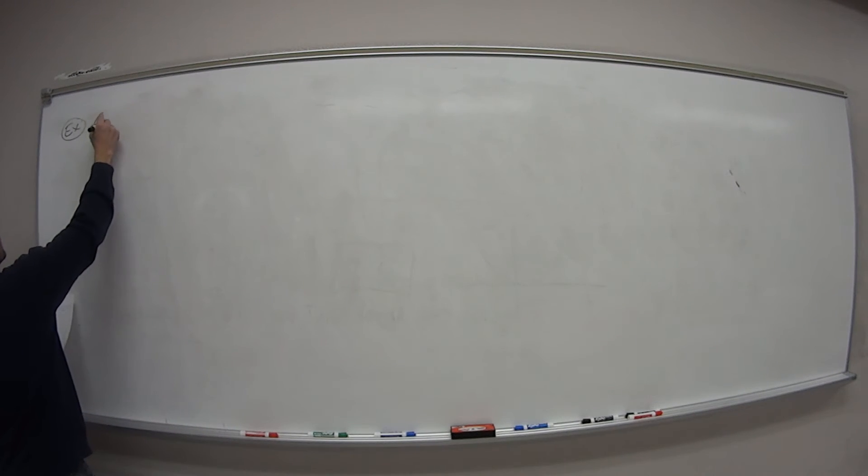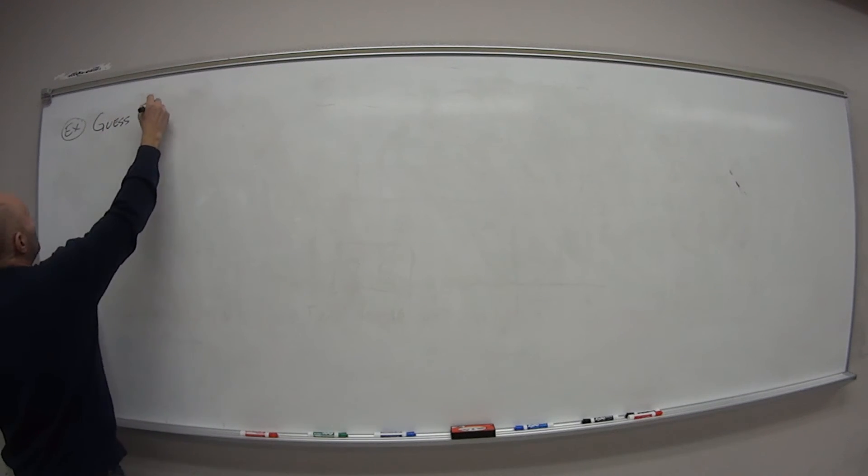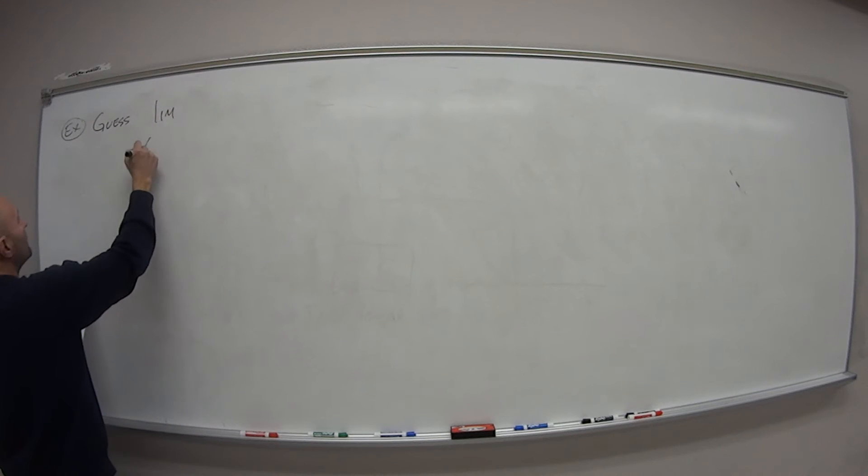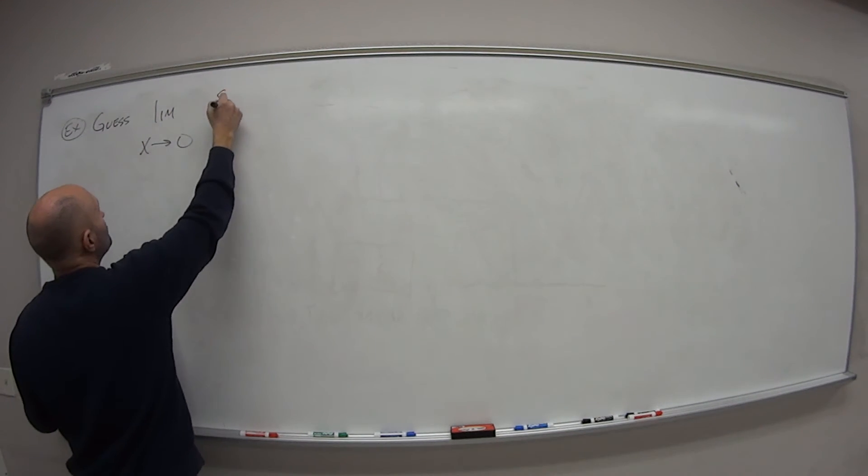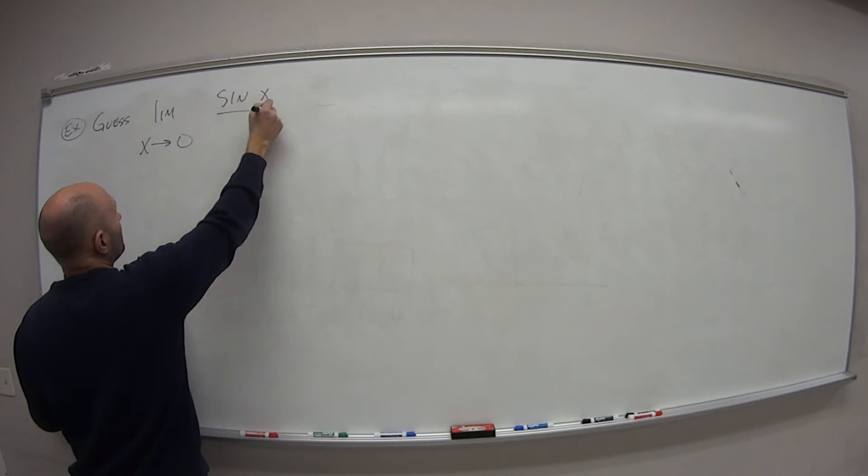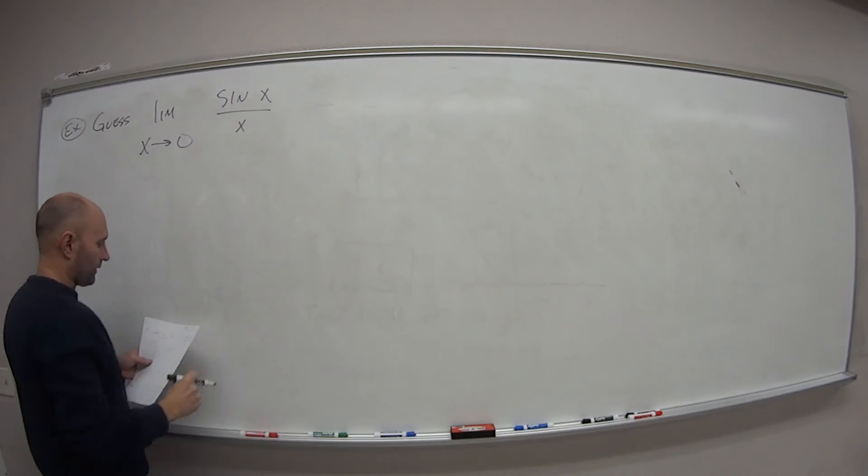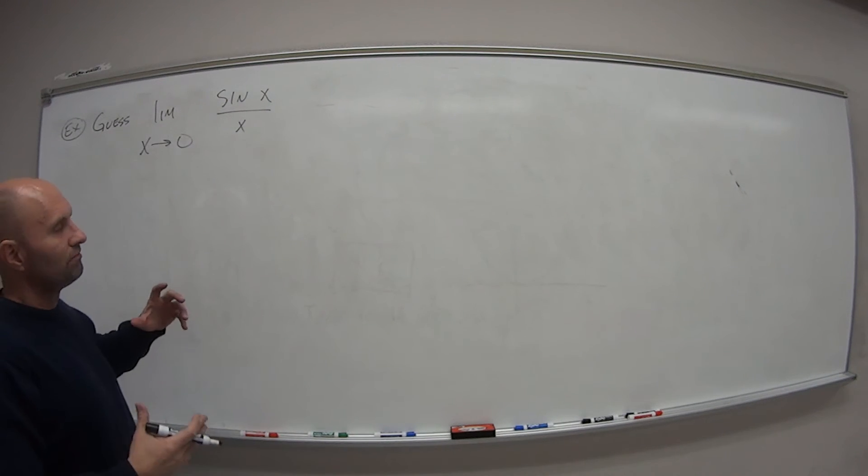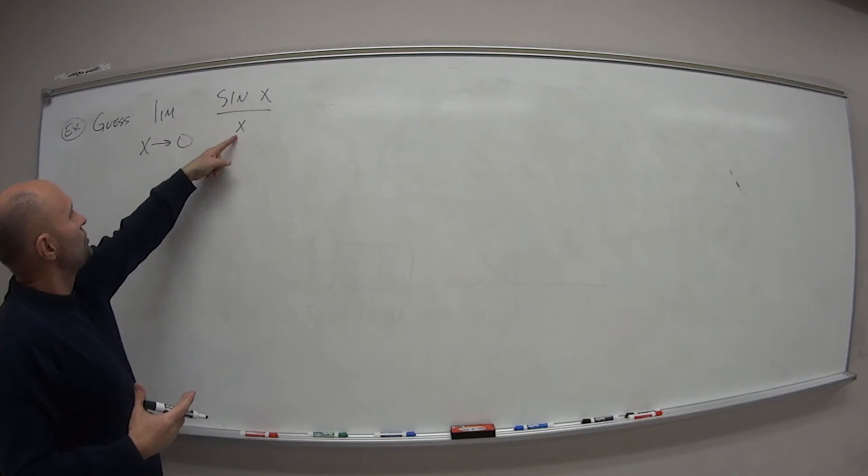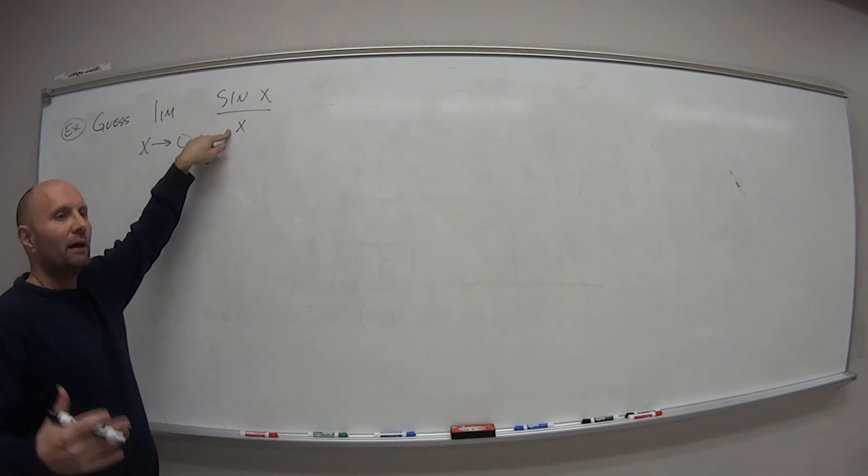But we want to guess the limit as x approaches 0 of the function sine of x over x. So a couple things here. First, if we were just to plug in 0, what happens? We get a 0 in the denominator. That's big trouble.